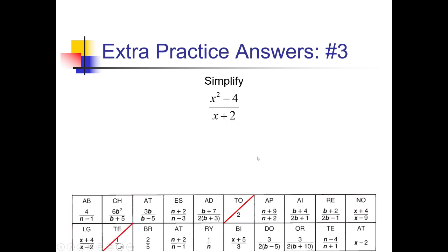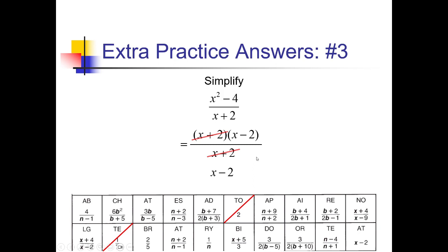For number 3, taking a look at my numerator — x squared minus 4. That's the difference of squares. I can use my square-rooting shortcut with the plus and minus. Square root of x squared is x, square root of 4 is 2, so I have (x + 2)(x − 2). And the (x + 2) that was in the denominator just comes down here. So these (x + 2)s cancel out, leaving me with just x minus 2. That's the AT answer over here, so let me cross that off.